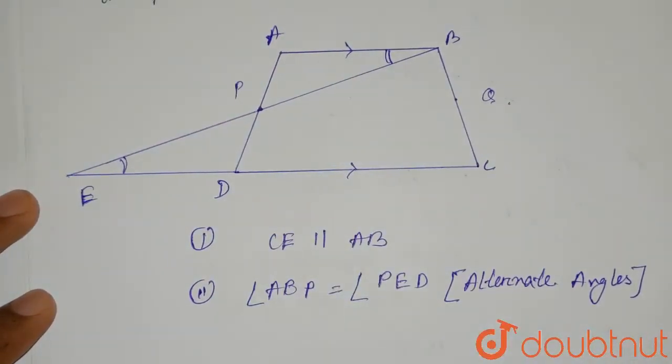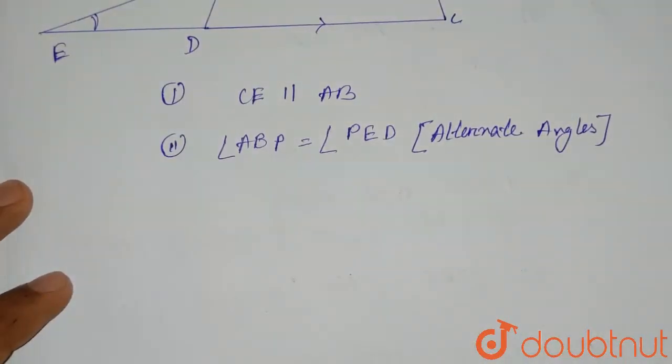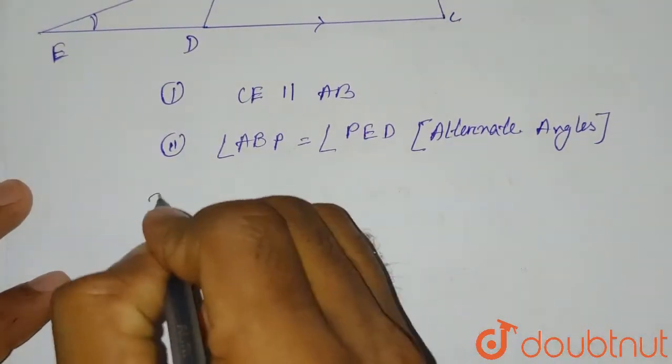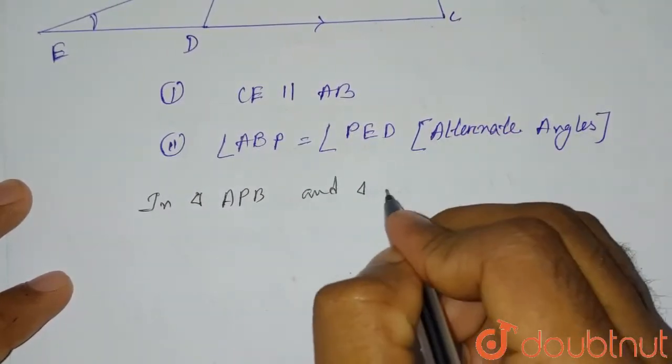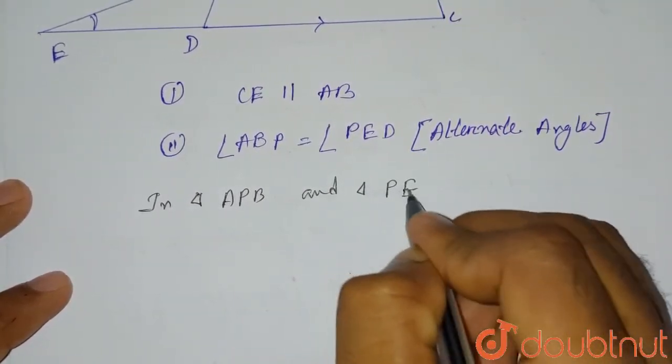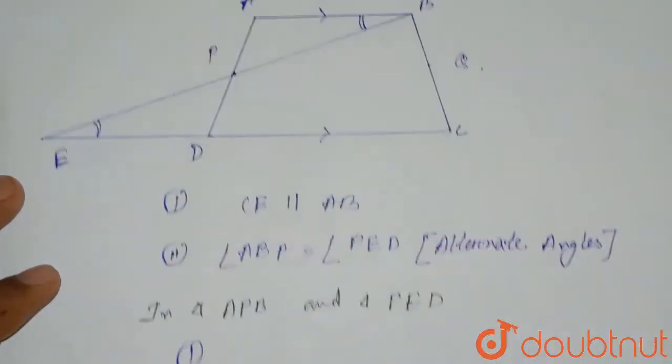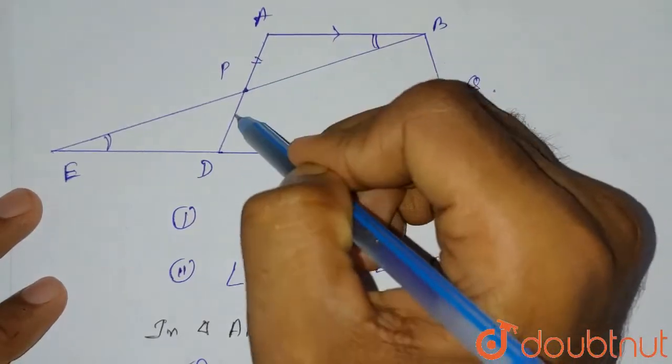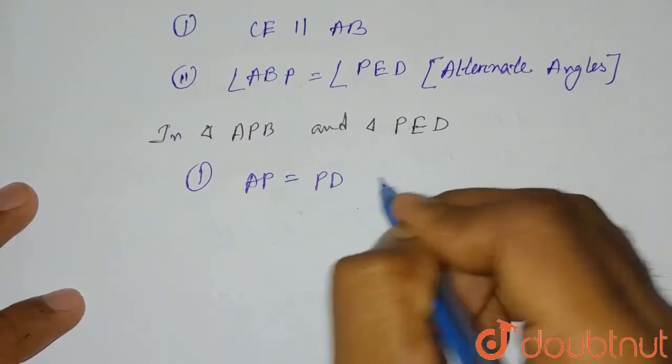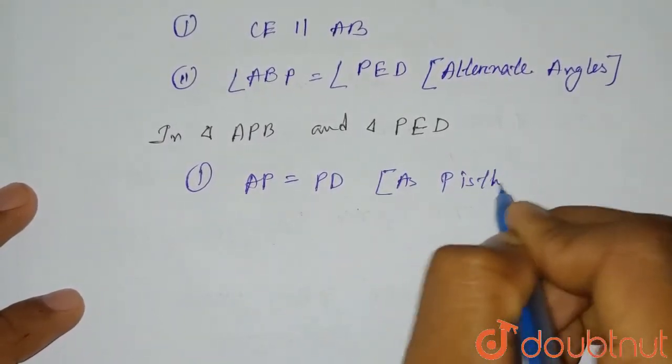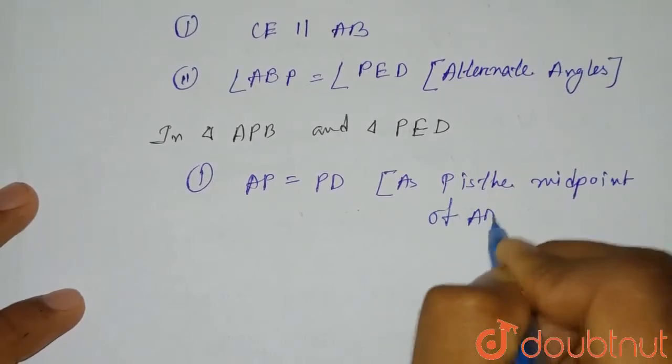So if we consider these two triangles, triangle APB and triangle PED. In triangle APB and triangle PED, what do we get? First thing is AP equals to PD, as it is given that P is the midpoint of AD. So first thing will be AP equals to PD, as P is the midpoint of AD.